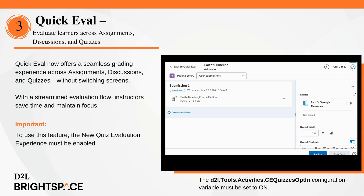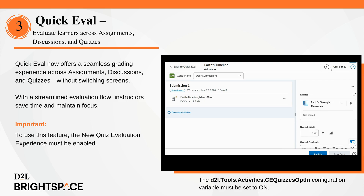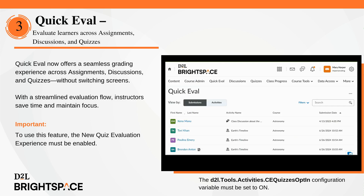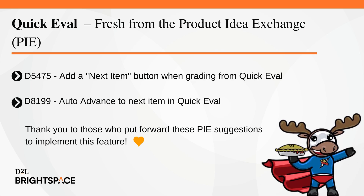This feature is controlled by the new Quiz Evaluation Experience configuration variable, which must be changed to ON. This feature implements the following PI items: D5475 — add a Next Item button when grading from QuickEval; D8199 — auto-advance to Next Item in QuickEval. Thank you to those who put forward these PI suggestions.